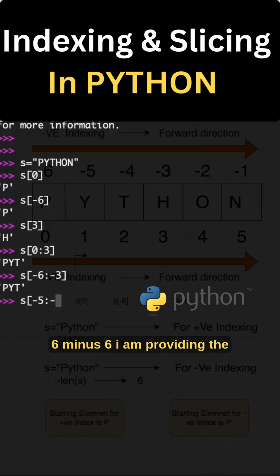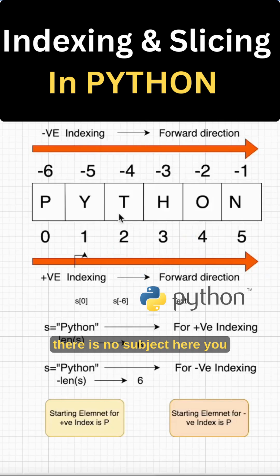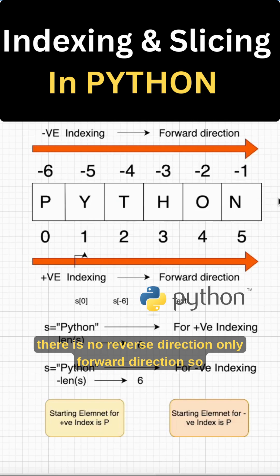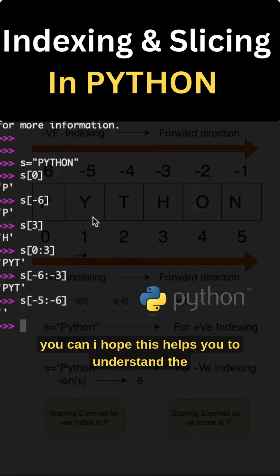Minus 6. I am providing the reverse direction. It is only forward direction we will get the corresponding values. But in reverse direction you will get the space as answer. So there is no subject here, you got it. Minus 5, minus 6, between that there is no reverse direction, only forward direction.